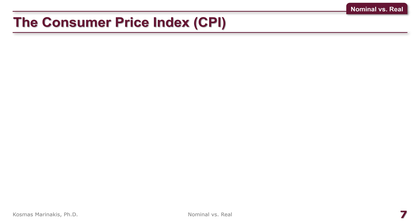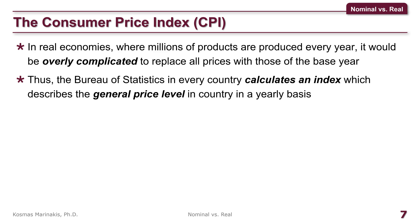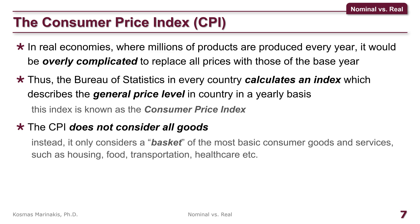But how do we calculate the real GDP in reality? In real economies, where millions of products are produced every year, it would be overly complicated to replace millions of prices with those of the base year. Thus, the Bureau of Statistics in every country, every year, calculates an index which describes the general price level in the economy. This index is known as the Consumer Price Index, or CPI. The CPI does not consider all goods. Instead, it only considers a basket of the most basic consumer goods and services, such as housing, food, transportation, healthcare, etc. In other words, the CPI uses a sample of products to approximate the average price level in the entire economy.